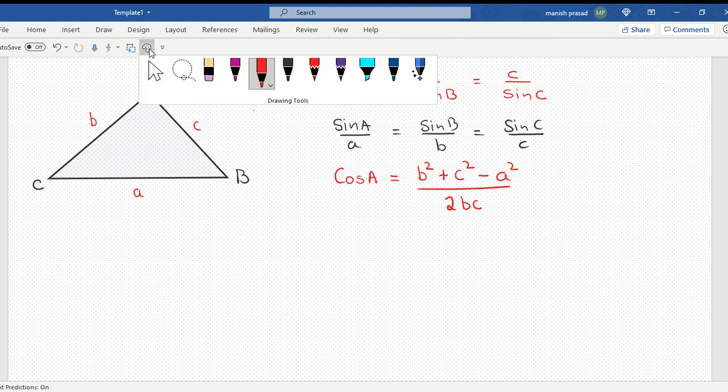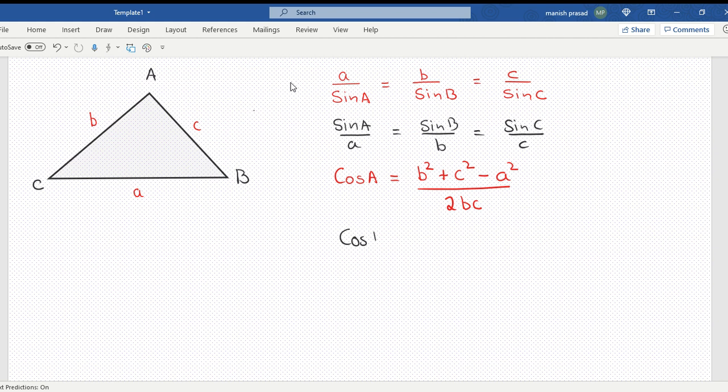Now let's look at cos B. What are the adjacent sides of cos B? For angle B, the adjacent sides are C and A. So that would be A square plus C square. What would be minus? The opposite is B square upon 2 times the product of the adjacent sides, A, C.